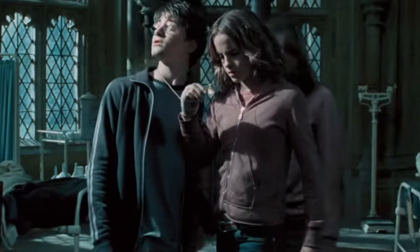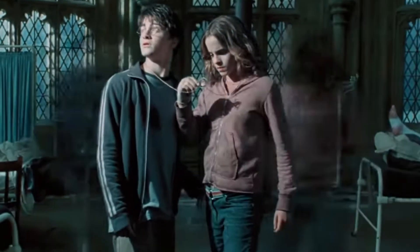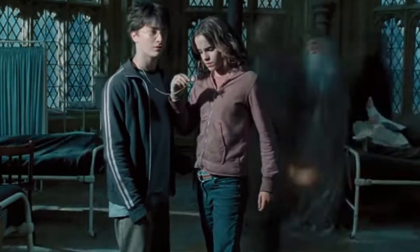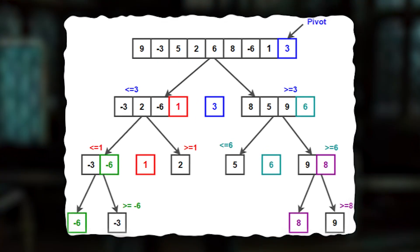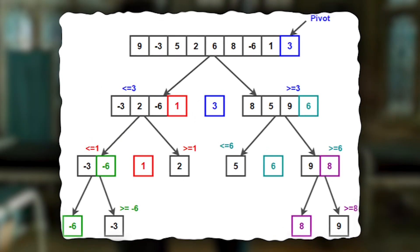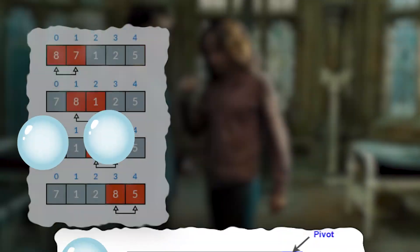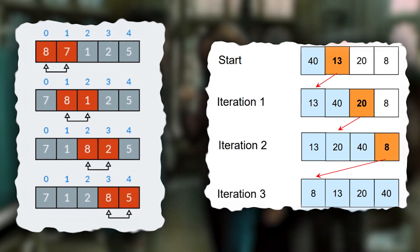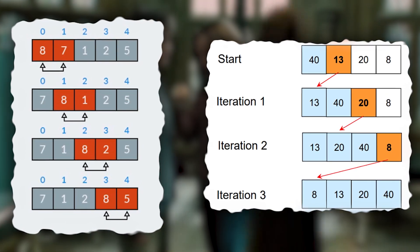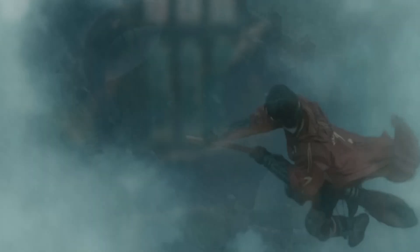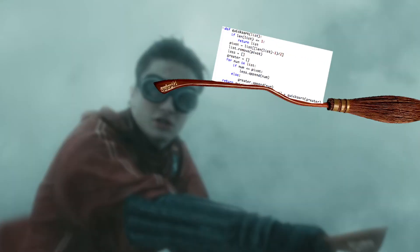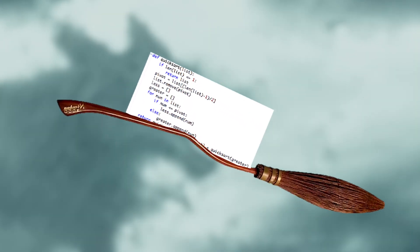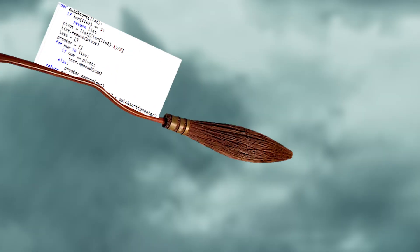It's like using a time turner to work on multiple tasks simultaneously. You might wonder how quicksort compares with other magical sorting methods, like bubble sort or insertion sort. While these methods have their charm, they can be slower and less efficient. Quicksort is like the Firebolt broomstick of sorting methods — it's fast, agile, and leaves the others trailing in its magical wake.